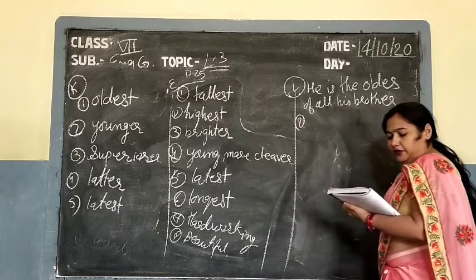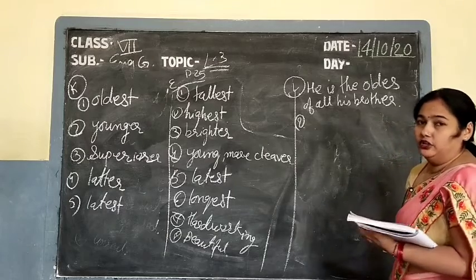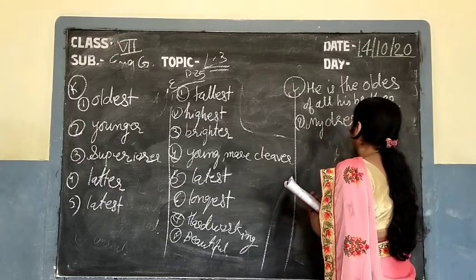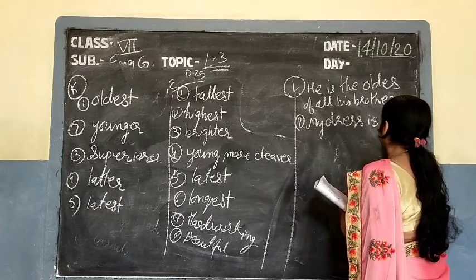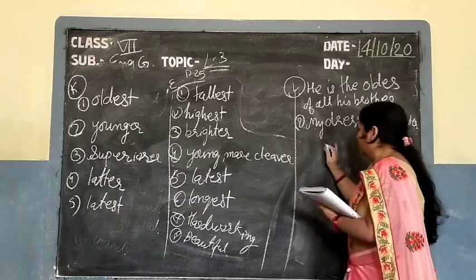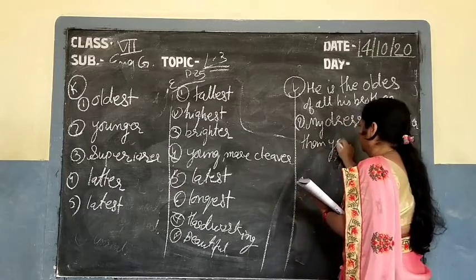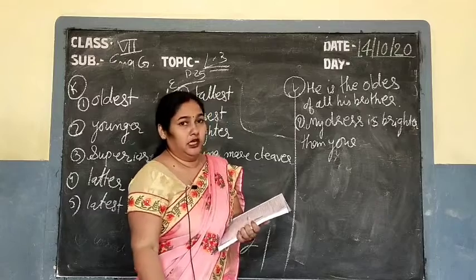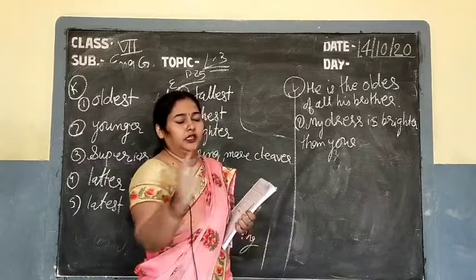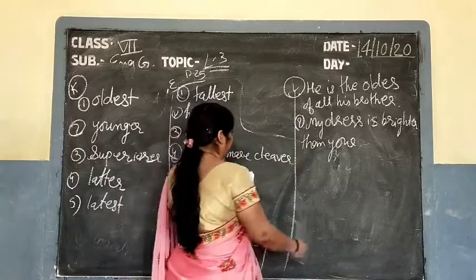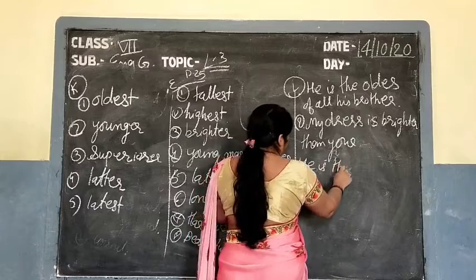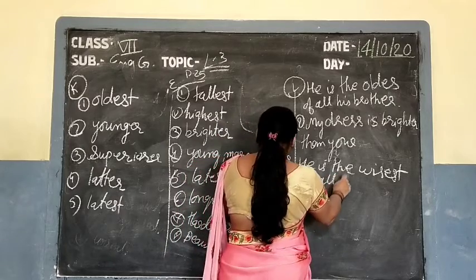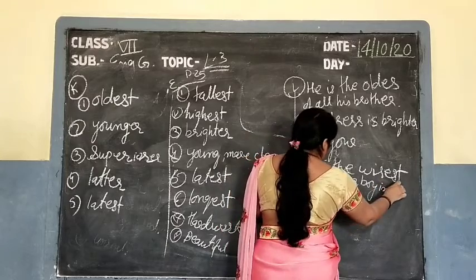Next: My dress is more brighter than yours — 'more' should be cut, so: My dress is brighter than yours. Next sentence: He is the dash wisest of all the boys in the class — since it is among all boys, it is superlative degree, so: He is the wisest of all the boys in the class.